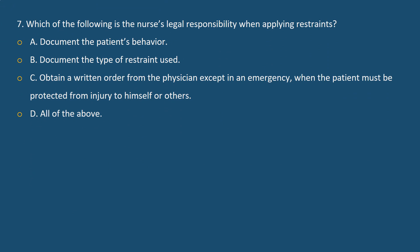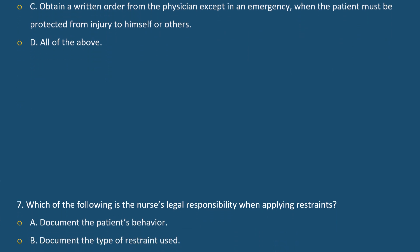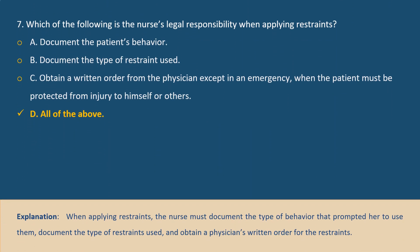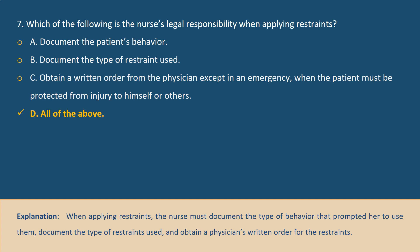Question 7. Which of the following is the nurse's legal responsibility when applying restraints? A. Document the patient's behavior. B. Document the type of restraint used. C. Obtain a written order from the physician, except in an emergency when the patient must be protected from injury to himself or others. D. All of the above. Answer D. Explanation: When applying restraints, the nurse must document the type of behavior that prompted their use, document the type of restraint used, and obtain a physician's written order for the restraints.